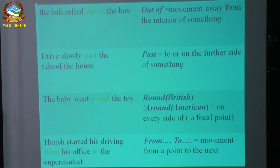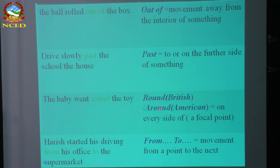Out of means away from the interior of something — 'the ball rolled out of the box.' Past means if you move further beyond a point — 'the boy drives slowly past the schoolhouse.' Round means movement around a focal point; in British English we use 'round,' in American English 'around.' From indicates movement from one particular point to a destination — 'Horace started his driving from his office to the supermarket,' meaning from one point to the other.